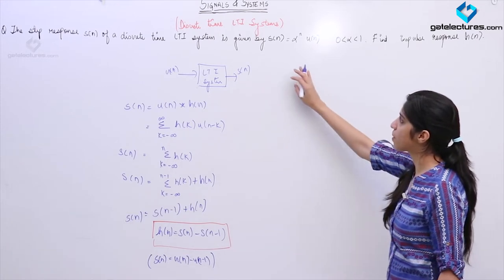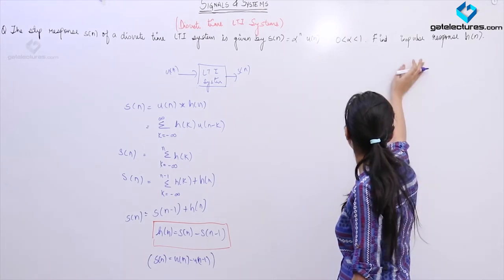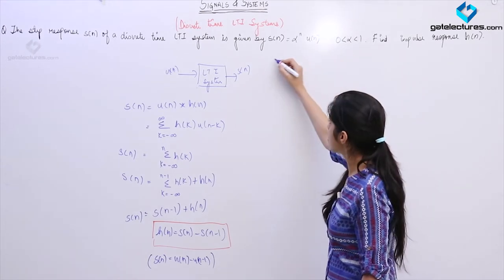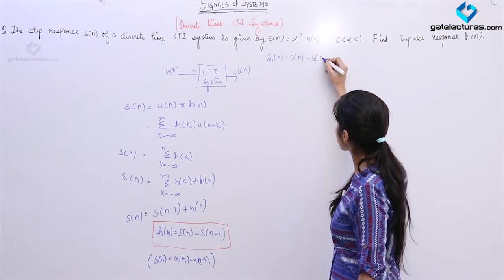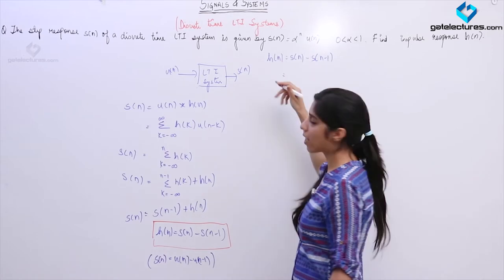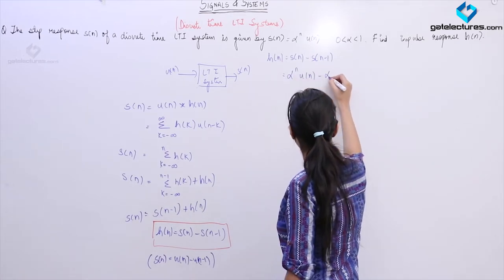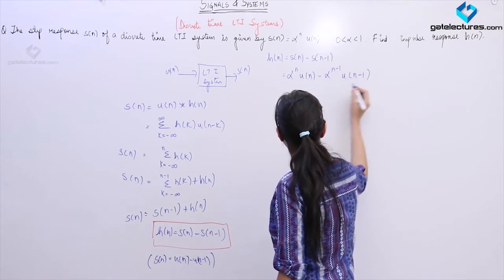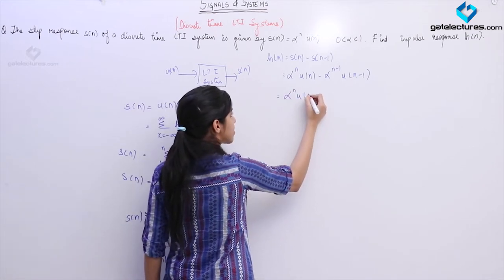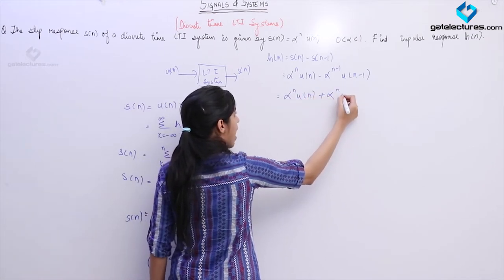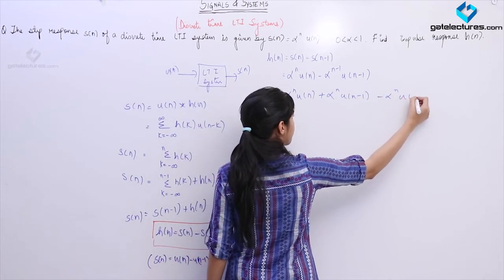Now look at this question. They have given the step response of the system as S(n) equals alpha to the power n times U(n), and we are asked to find the impulse response. As you know, the impulse response of the system is going to be S(n) minus S(n minus 1). Now just put the values in this equation: this is going to be alpha^n · U(n) minus alpha^(n minus 1) · U(n minus 1). What I am doing is adding and subtracting one term.